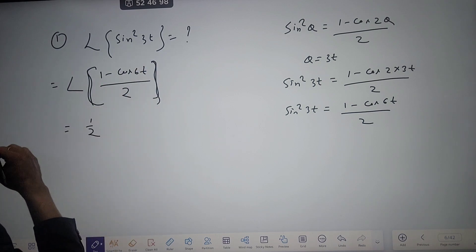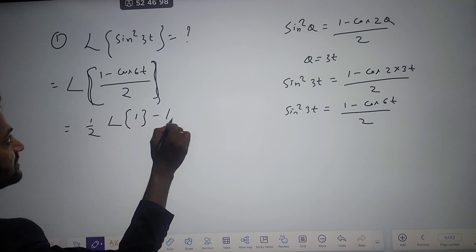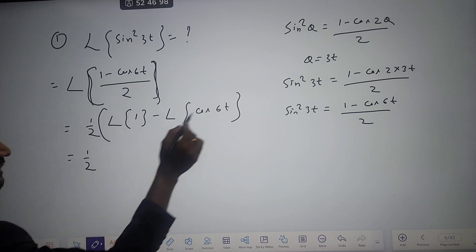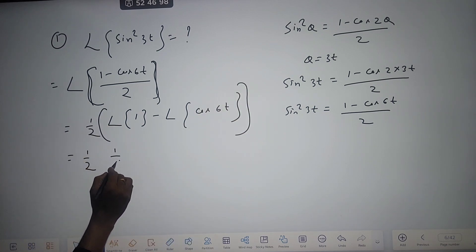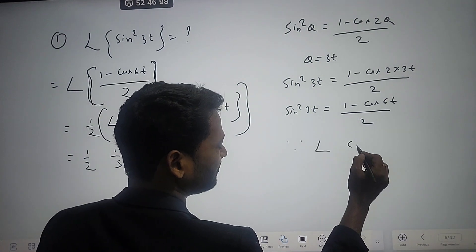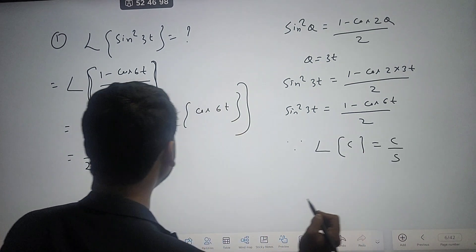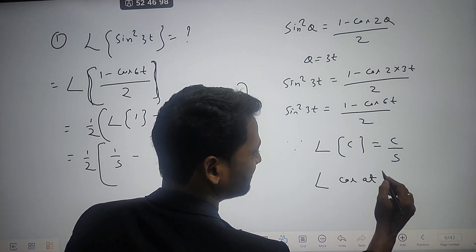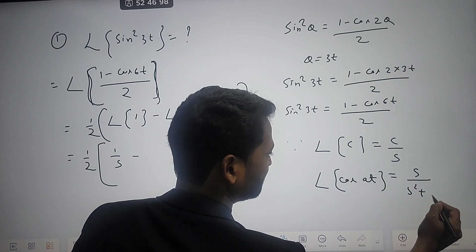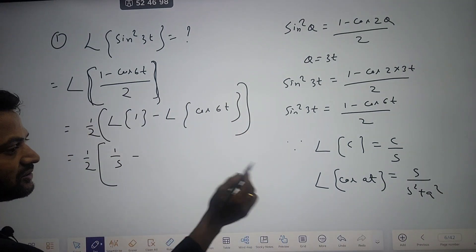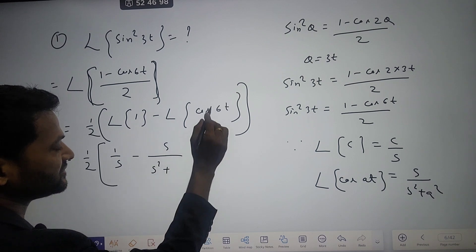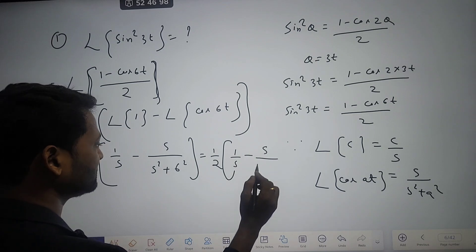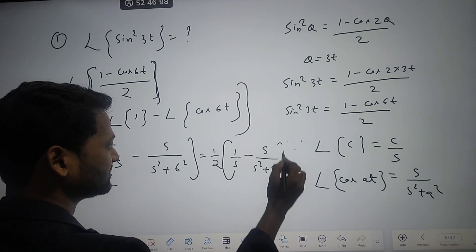One half is a constant factor. So we have: (1/2) × [Laplace of 1 − Laplace of cos(6t)]. Laplace of 1 is 1/s. Laplace of cos(at) = s/(s² + a²). Here a = 6, so 6² = 36. The final answer is: (1/2)[1/s − s/(s² + 36)].